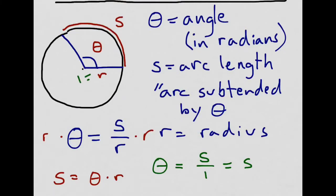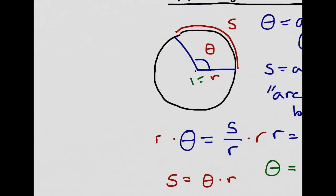Let's take a look at some examples showing how we can use this formula. Suppose we have a circle with a radius of 4 meters and there's an angle, a central angle, that subtends an arc of 9 meters.